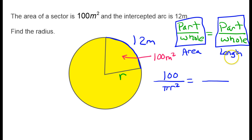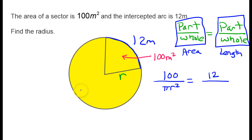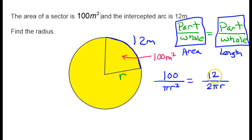Now I'll do a similar thing for the length. Part over whole for length: the partial length is the length of the arc, so that's 12. The whole length around the circle — if it were made of string — is called the circumference, and the circumference is 2πr.